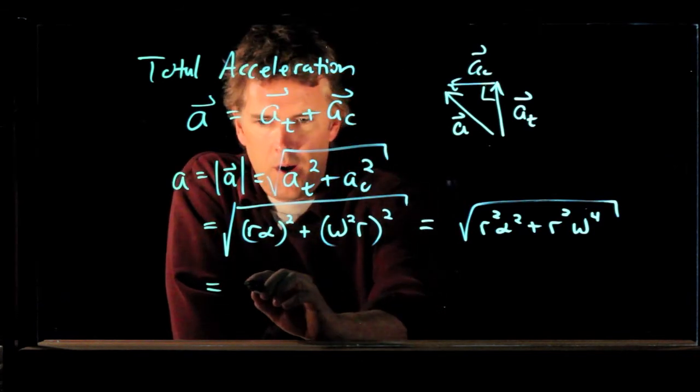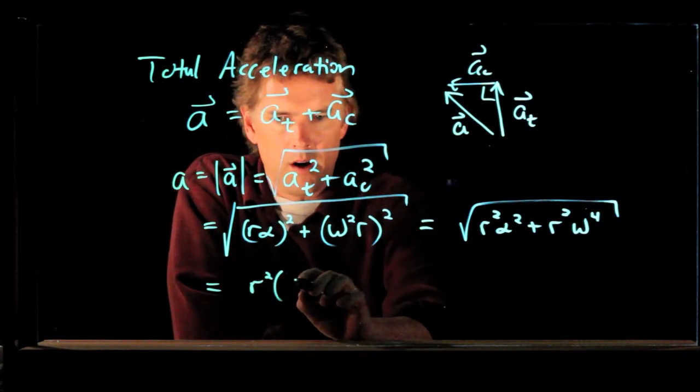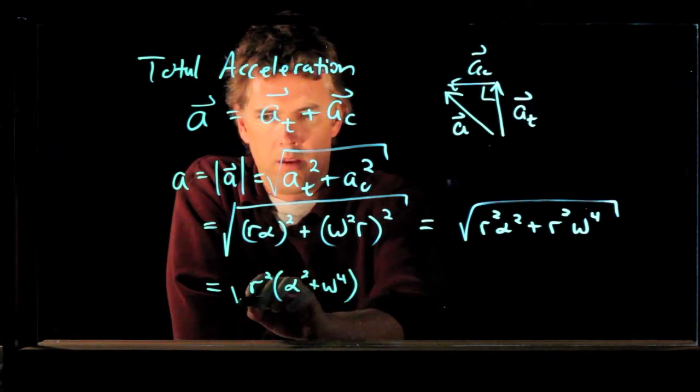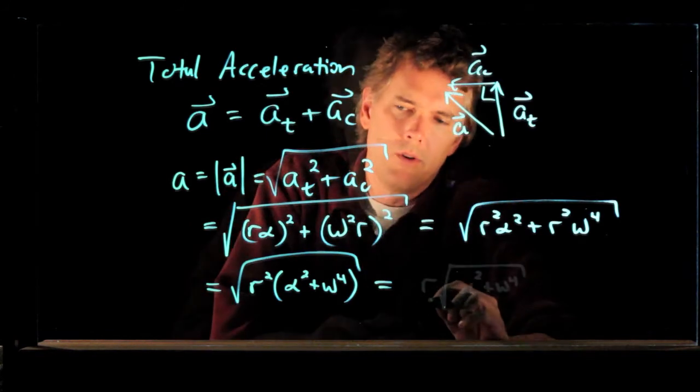And I have an r squared in both of them. So we can write it r squared times alpha squared plus omega to the fourth square rooted.